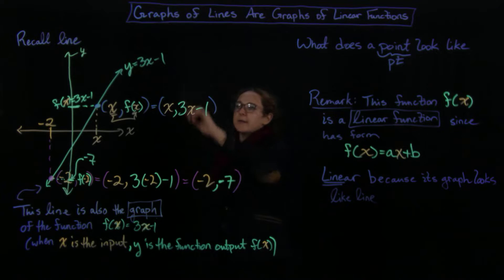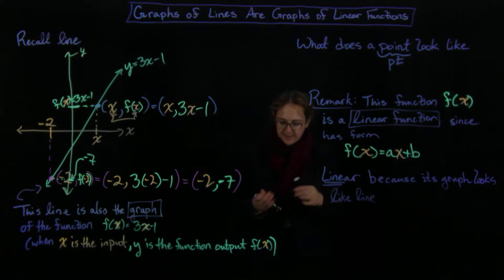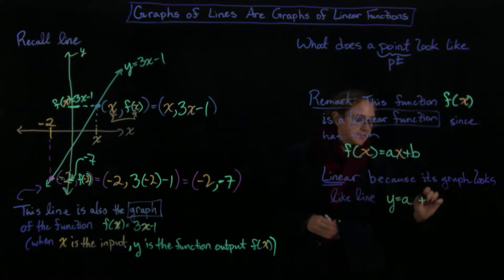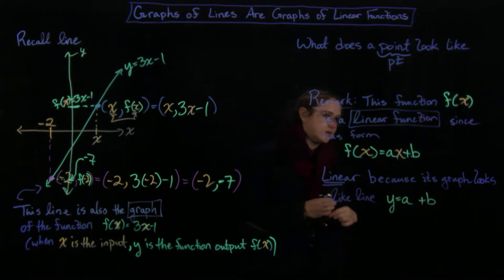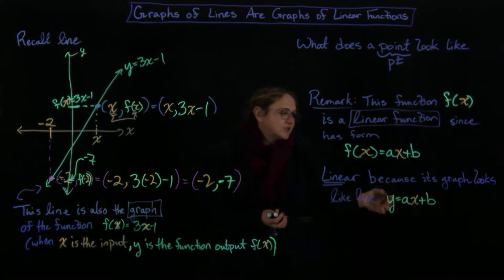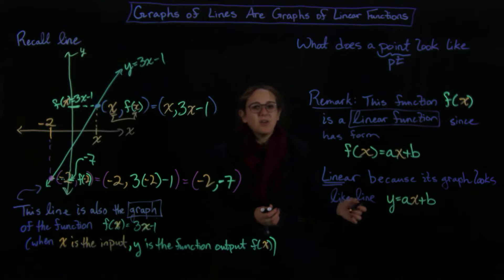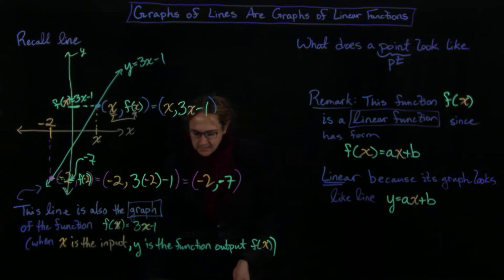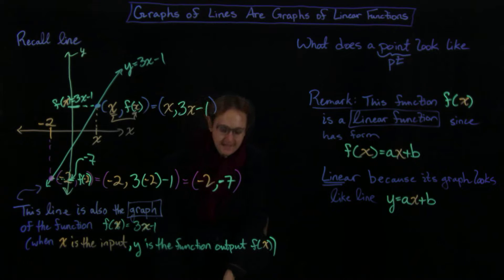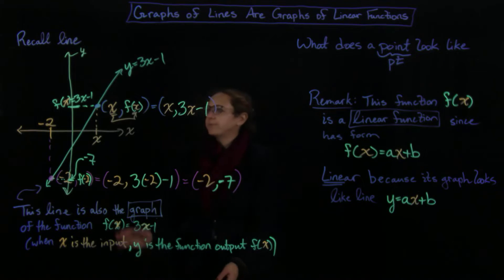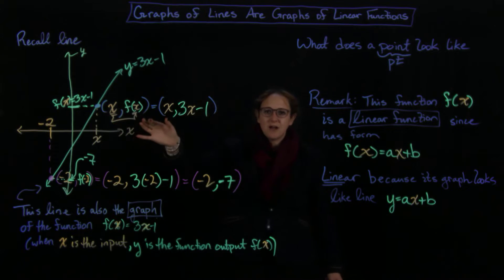Just like with here, it's going to be y equals ax plus b. You can see how those correspond. You might ask how this is different — it's not really different, it's just that y is telling you the output, and we're thinking of it as the graph of a function. When you start out with the graph of a line, this can actually be the graph of a function where your input is the first coordinate and your output is the second coordinate.